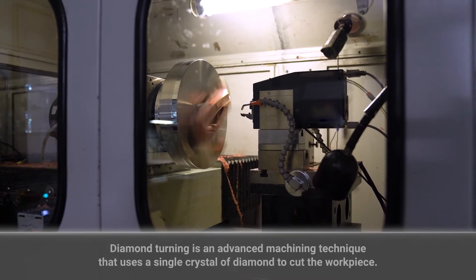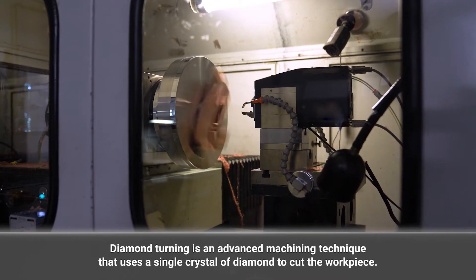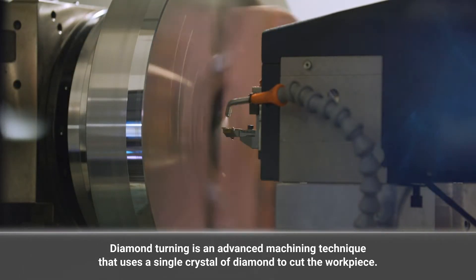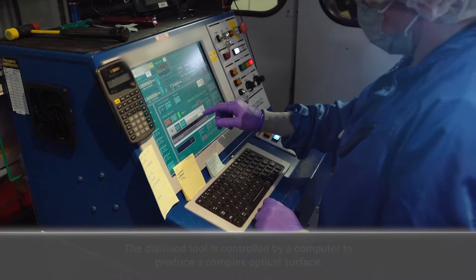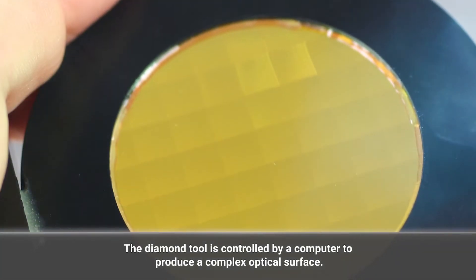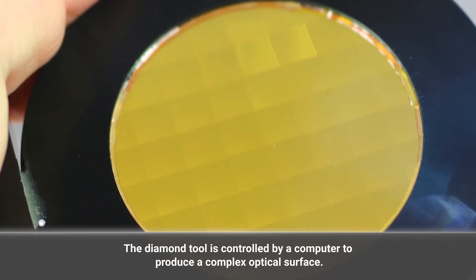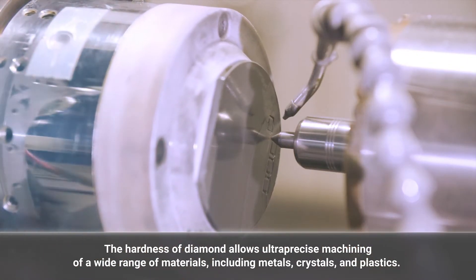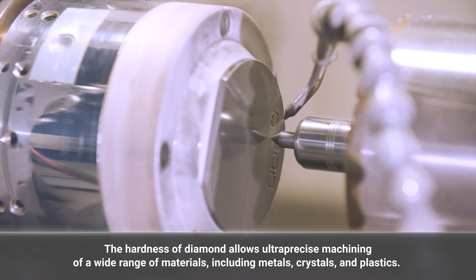Diamond turning is an advanced machining technique that uses a single crystal of diamond to cut the workpiece. The diamond tool is controlled by a computer to produce a complex optical surface. The hardness of diamond allows ultra-precise machining of a wide range of materials.